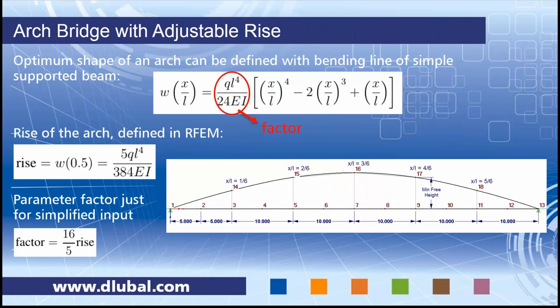The next slide is mathematical, but don't be scared — it's basically just the function describing the bending line of a simply supported beam, which defines the optimum shape of an arc. We need to define nodes 14 to 18. The X positions are 1/6, 2/6, 3/6, 4/6, and 5/6 of the span. The rise is at the center of the bending line. I've defined a parameter 'factor' used internally to simplify node definition, connected to the parameter 'rise' via the relation: factor = (16/5) × rise.